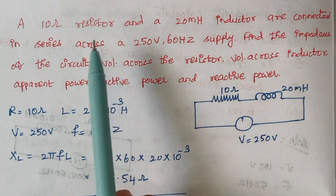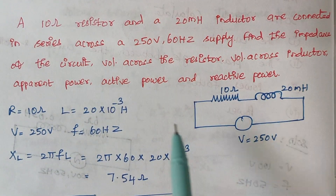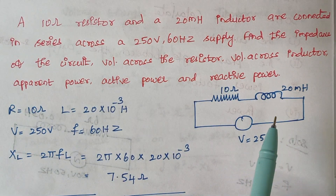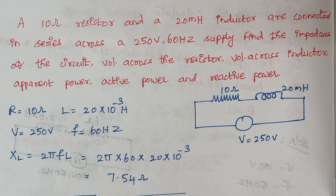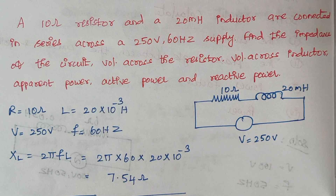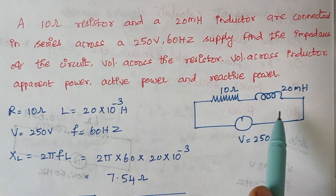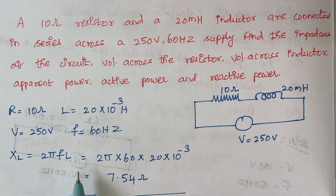Here we have a resistor and an inductor connected in series to a 250 volt 60 hertz supply. The first step is to calculate the impedance Z, which is the square root of R² plus XL². The value of R is given, and we need to calculate XL using the formula 2πFL.